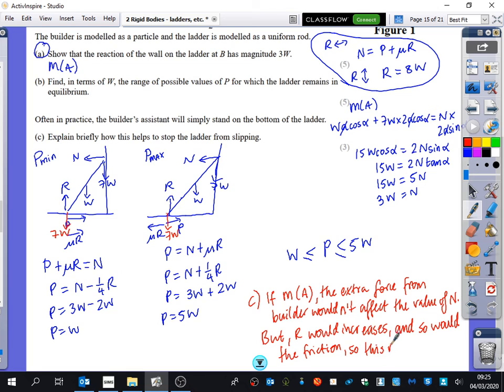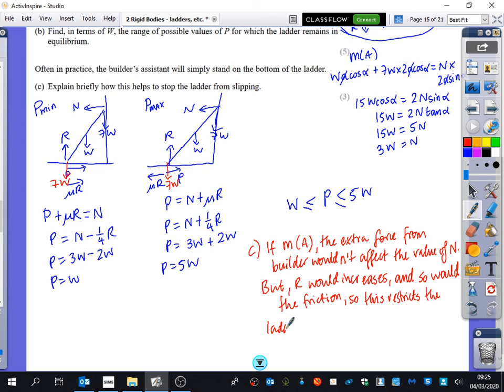So this restricts the ladder and stops it from slipping. So it's a three mark question. One is saying that if you were adding something at the bottom, the value of N doesn't change, because when you take moments about this point, it stays the same.